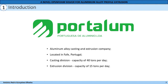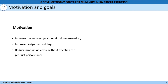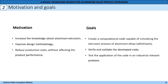Portalum is an aluminum alloy casting and extrusion company located in Fafe, Portugal, and was the company that motivated this work. They are divided into divisions: the casting division, with a production capacity of 40 tons of aluminum alloy per day, and the extrusion division, with a capacity of 15 tons per day. The motivation for this work is to increase the knowledge of aluminum extrusion, improve the design methodology, and reduce production costs without affecting product performance. The goals are to create a computational code capable of simulating the extrusion process of aluminum alloys in OpenFOAM, verify and validate the developed code, and test its application in an industrially relevant problem.